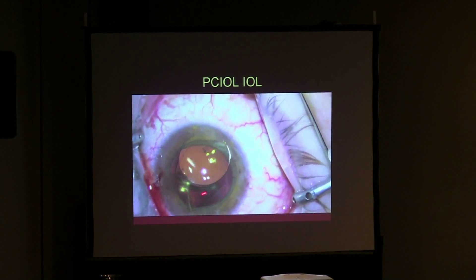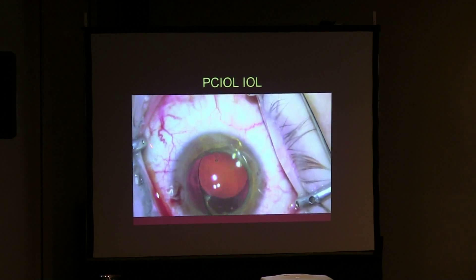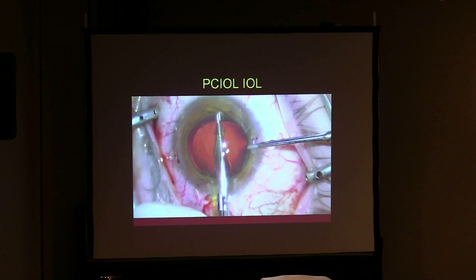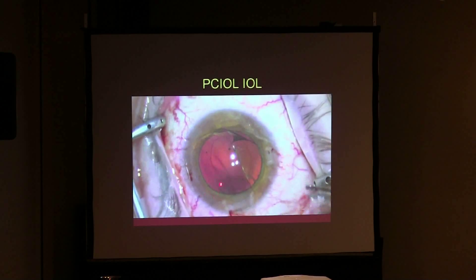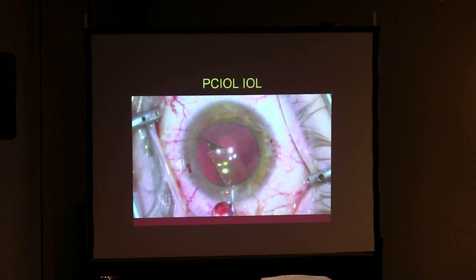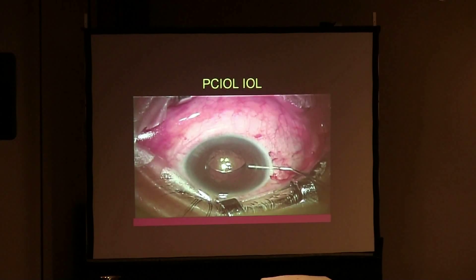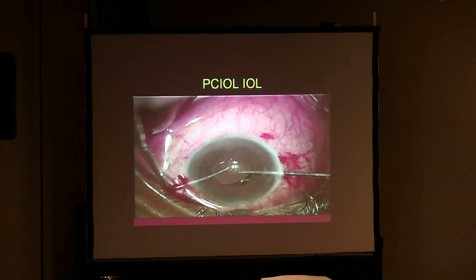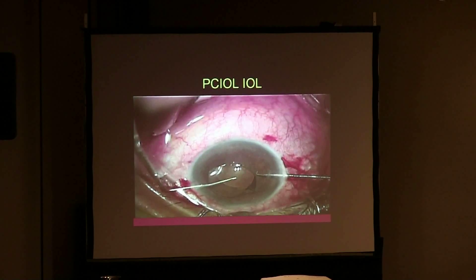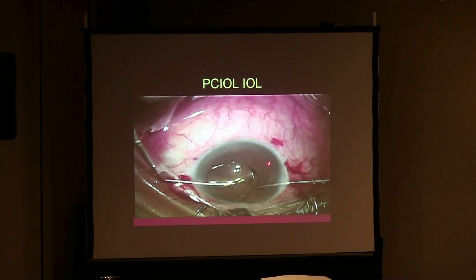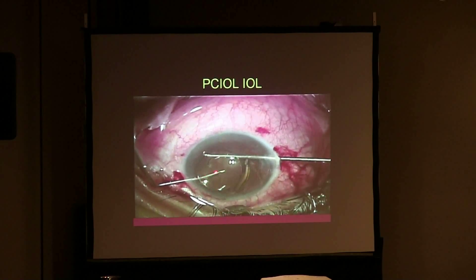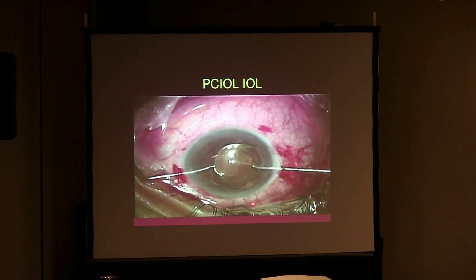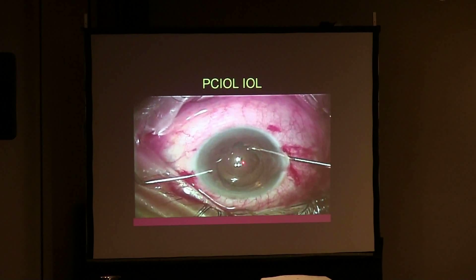The most important part is really to liberate the IOL and to bring it up to the anterior chamber. It's really good to know where your haptics are and just to rotate to the blunt edge, so you are not tearing the iris in the process. Here we know that the haptic direction is that way, so we're rotating around it to the blunt edge so we do not cause iris trauma.